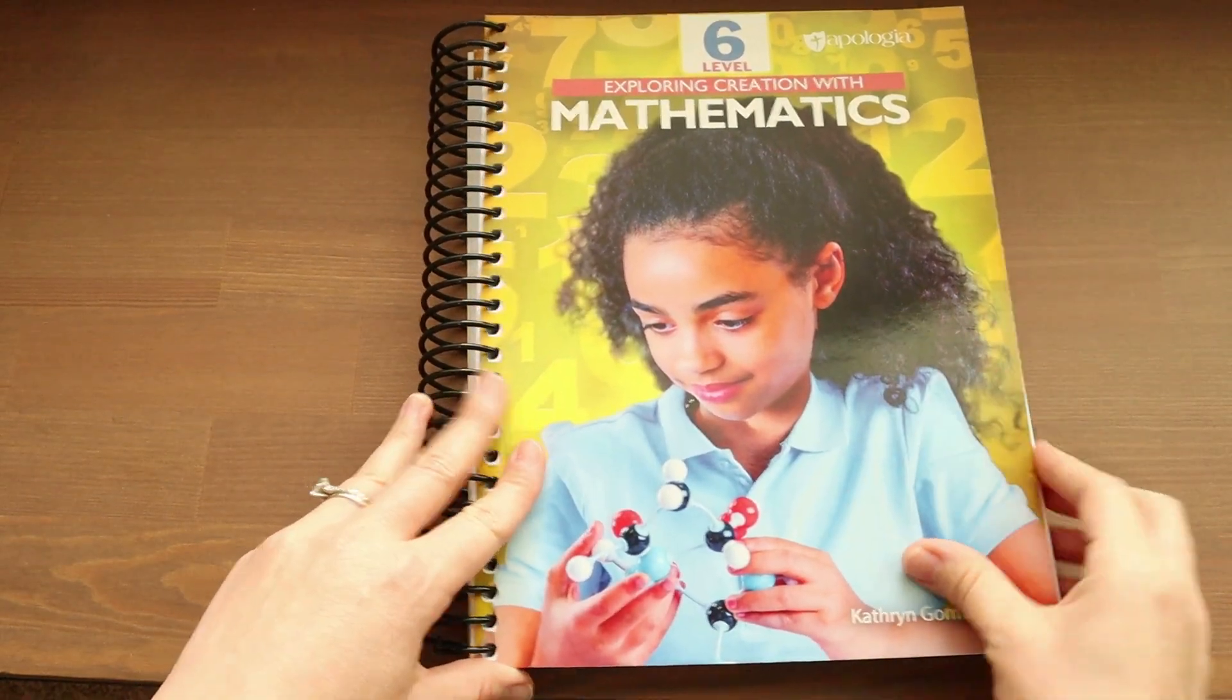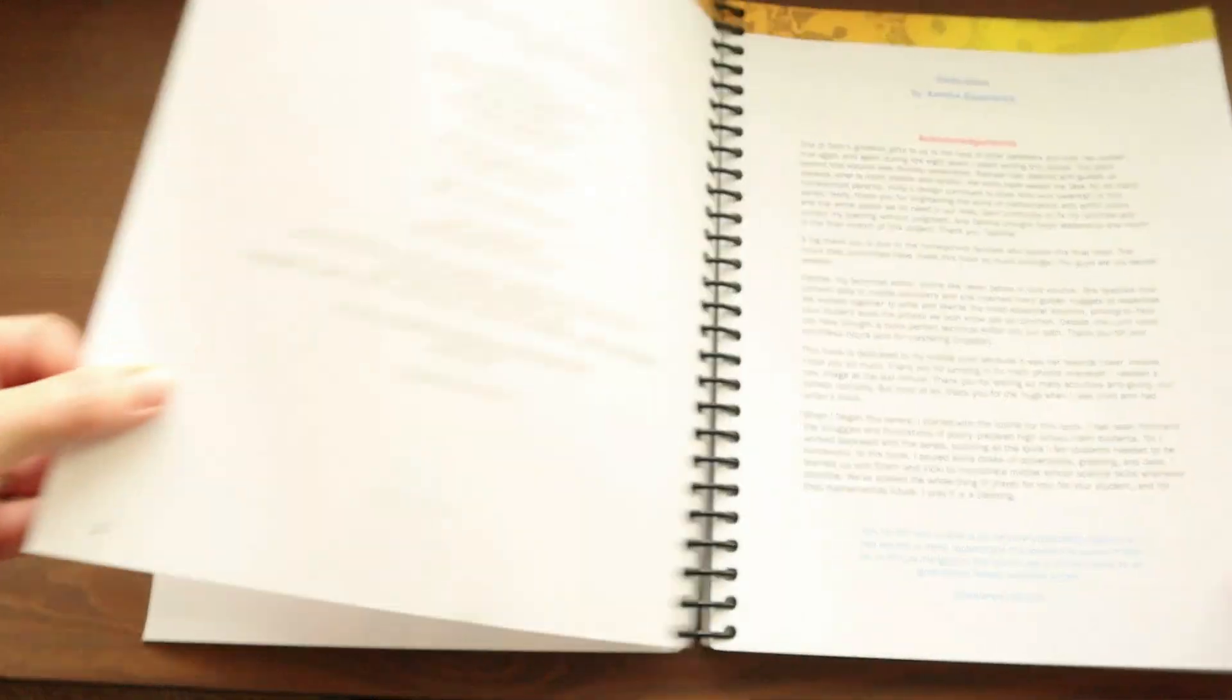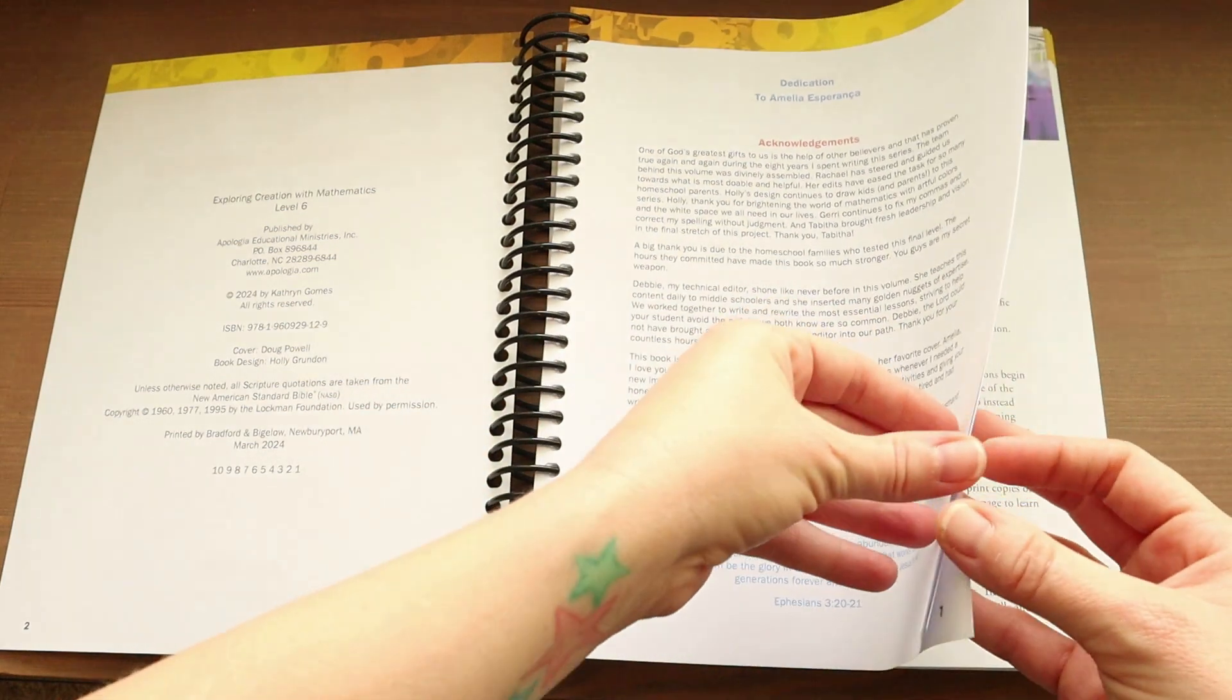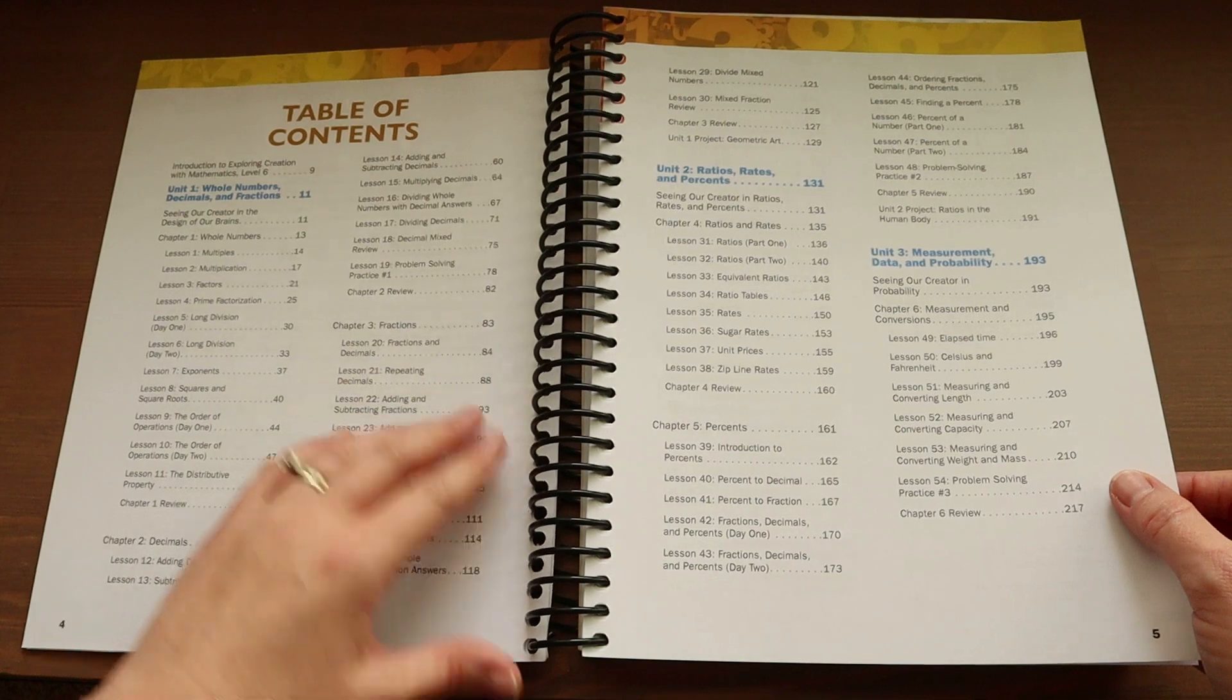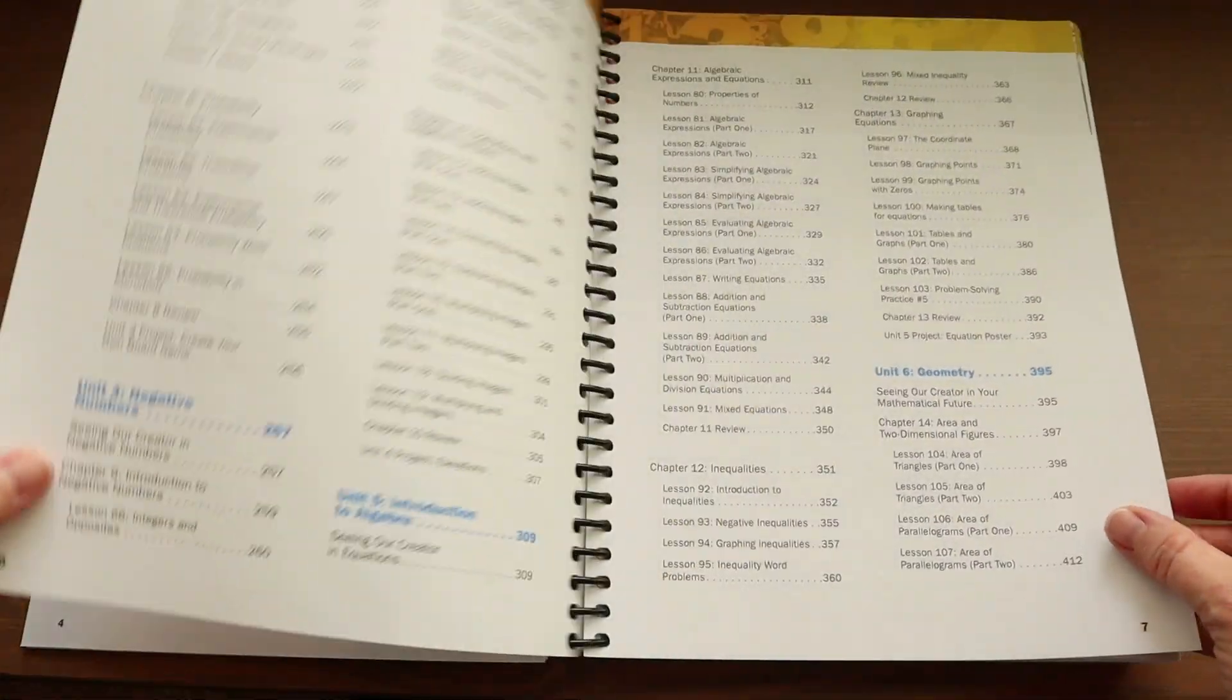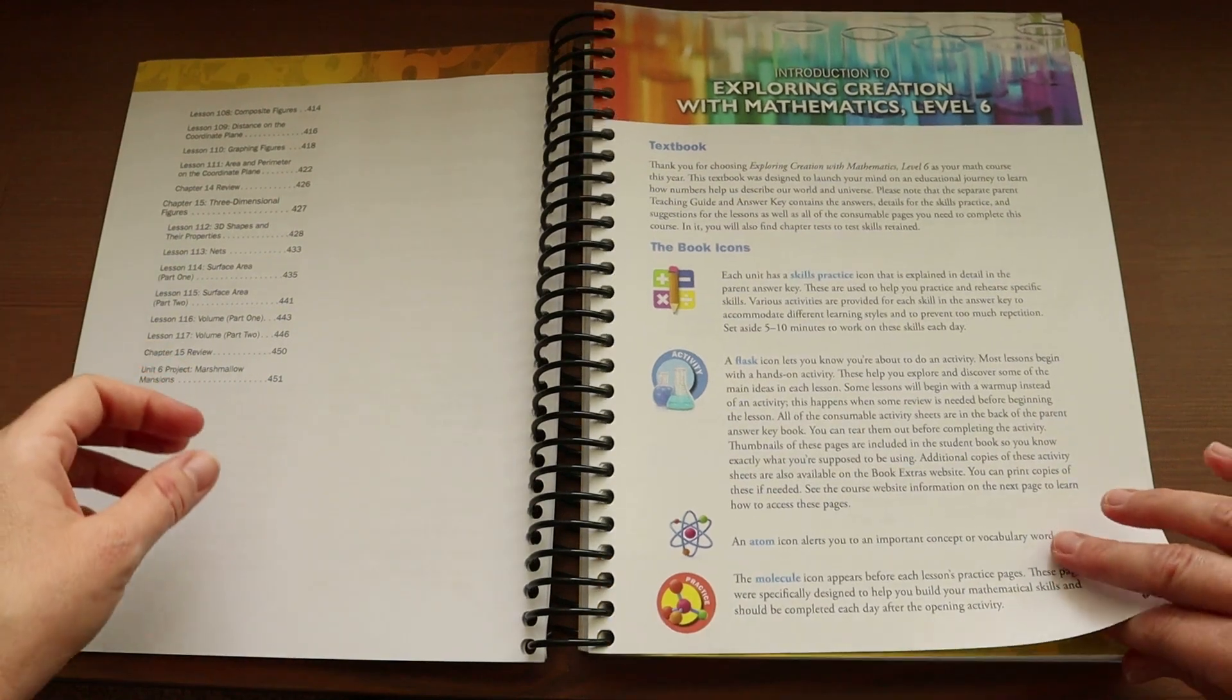Alright you guys, so this is the student book for Apologia Math 6. Now as you open it up, you get an acknowledgements page and then you jump right into the table of contents. You can see all of the lessons that you're going to be going over and what page numbers those land on.